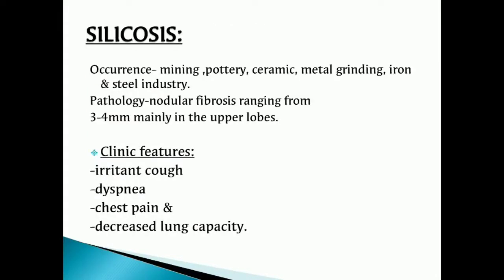Silicosis is caused by the inhalation of silica dust and is marked by inflammation and scarring in the form of nodules and lesions in the upper lobe of the lungs. Occurrence: mining, pottery, ceramic, metal grinding, and iron and steel industries. Pathology is nodular fibrosis ranging 3–4 mm, mainly in the upper lobes. Clinical features are irritant cough, dyspnea, chest pain, and decreased lung capacity.